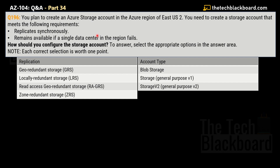Question 196, part 34. This video is really intense — you will learn a lot about Azure Storage Account, Azure Storage redundancy options, and replication options. The question says: you plan to create an Azure Storage Account in the Azure region East US 2. You need to create a storage account that meets the following requirements: it should replicate synchronously, and it should remain available even if a single data center in the region fails. Select the appropriate options in the answer area — each correct selection is worth one point.